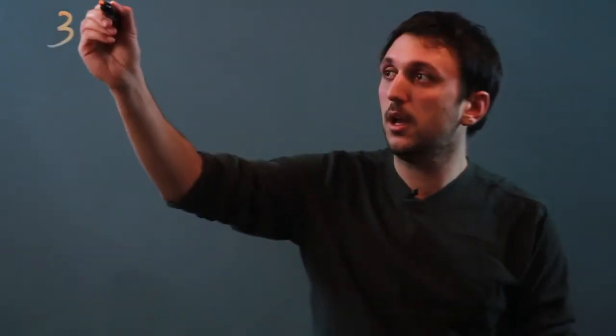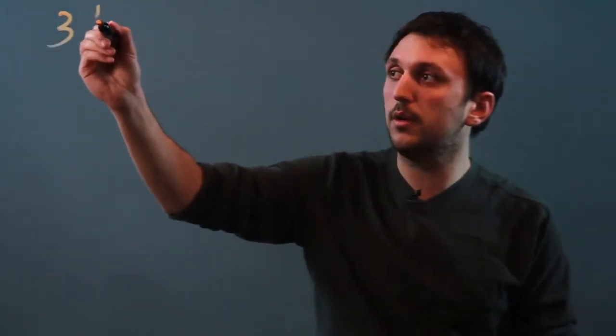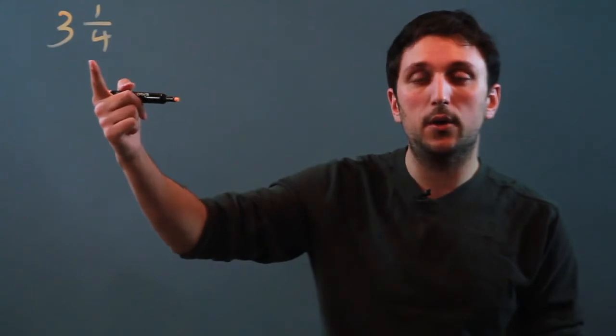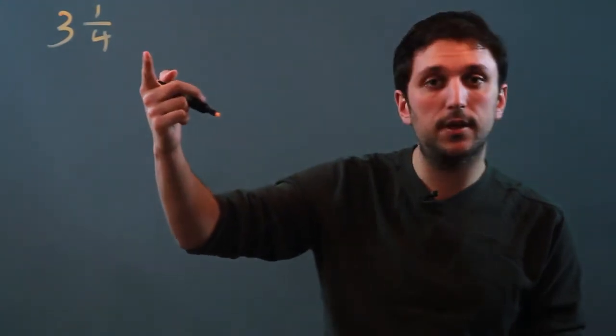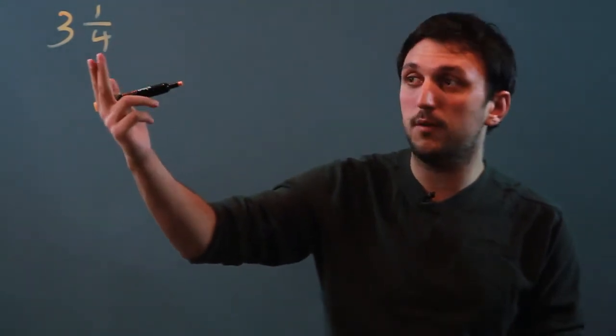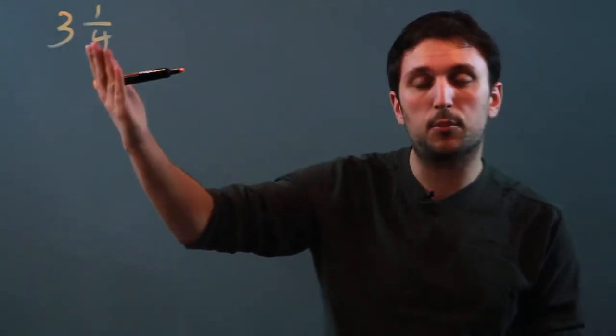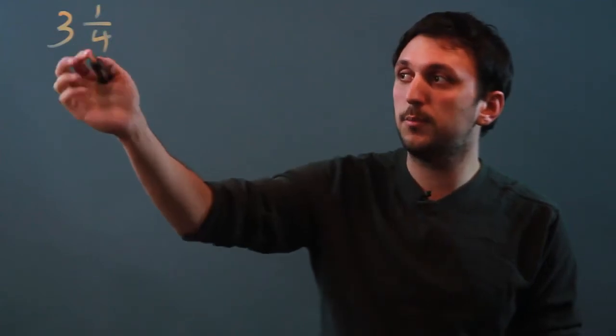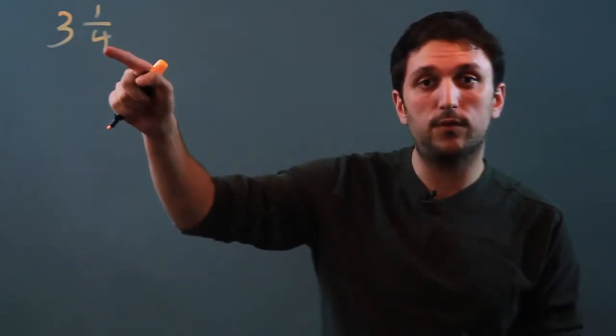So, for example, 3 and 1 fourth. Now, in order to halve it, we have to first make it a proper fraction. So let's make it all over 4.